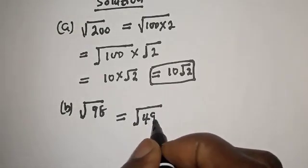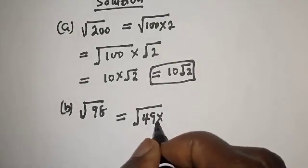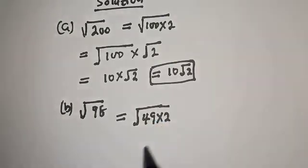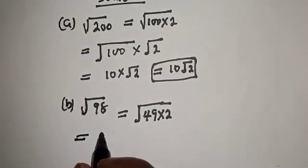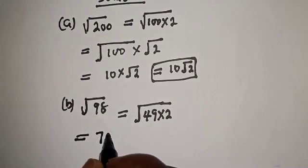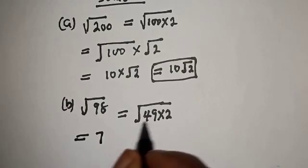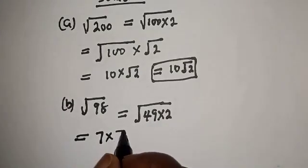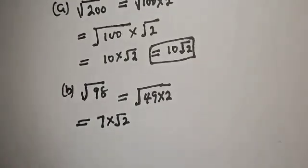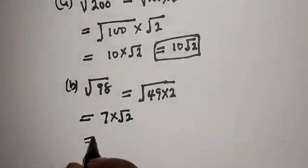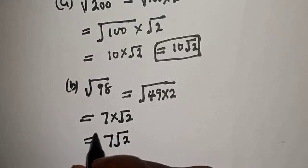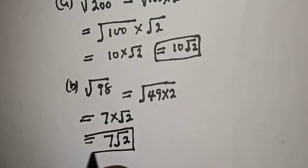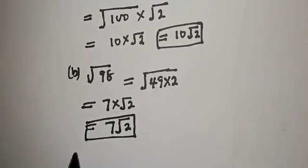Square root of 98 can be written as square root of 49 times 2. This equals square root of 49, which is 7, times root 2. So the answer is 7 root 2.